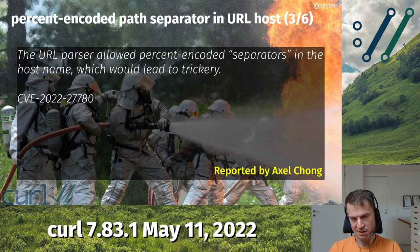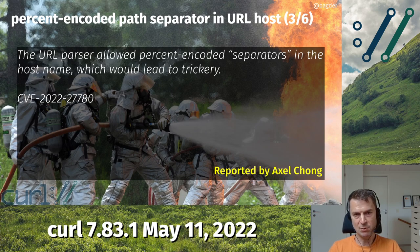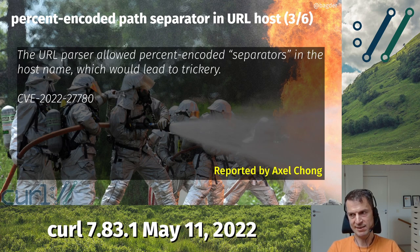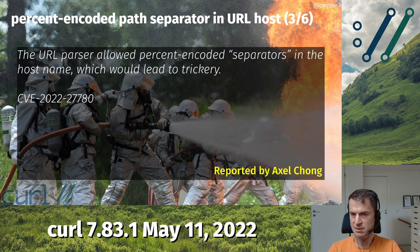CVE-2022-27780, also found by Axel Shong: percent-encoded path separator in URL host. If you use curl to parse a URL — for example, to check which host it's using or to filter URLs — and if a percent-encoded path separator (the ASCII slash code, percent-2E) was used in the host field, curl would decode that as a slash when decoding the URL. When re-encoding the URL it would insert the slash, tricking curl into believing it was a different hostname, potentially bypassing URL filtering or checks.